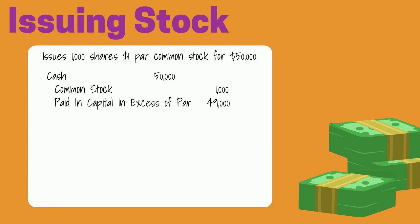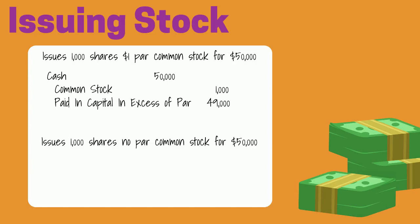What if this company was in a state that didn't issue a par or stated value for stock? If the stock was no par, then all of the amount received would be recorded in the common stock account. Cash would be debited for $50,000 and common stock would be credited for $50,000.